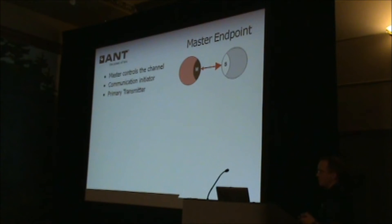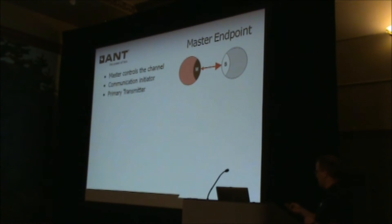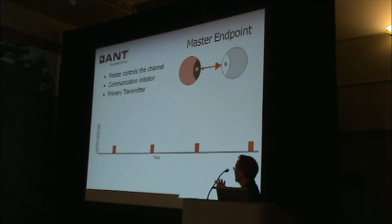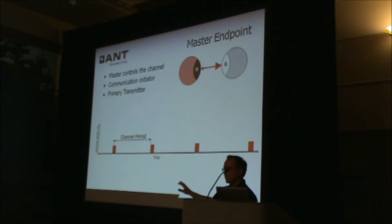The master endpoint controls the channel communications. It is the communication initiator — it sends the first message before a connection is established — and is the primary transmitter. An open ANT channel is always transmitting at some channel period. If you look at a master channel in the time domain, as soon as you open a master endpoint, it starts transmitting data packets at a configurable channel period, anywhere from 200 Hz to 0.5 Hz.